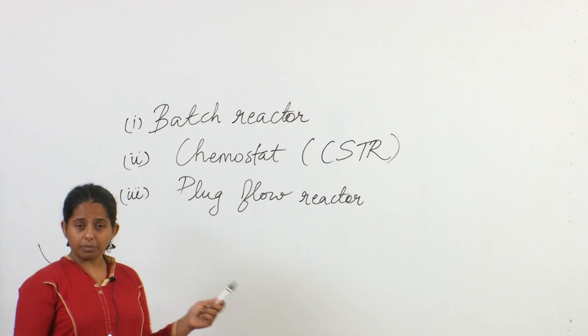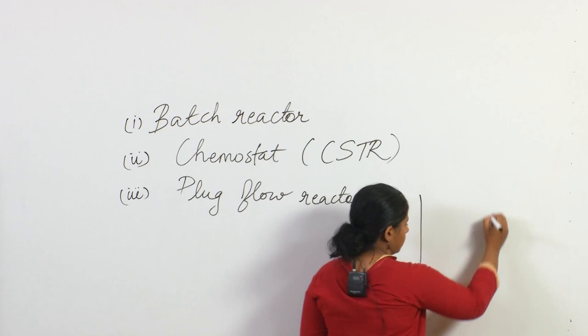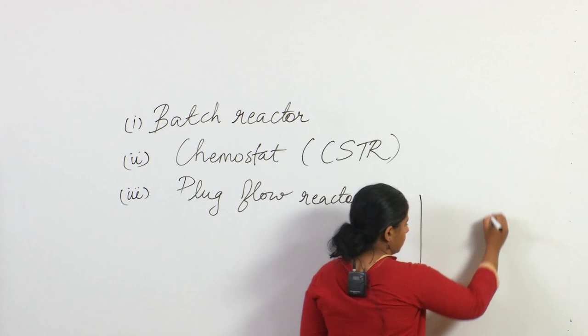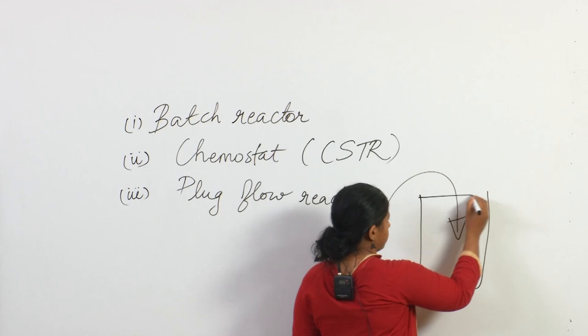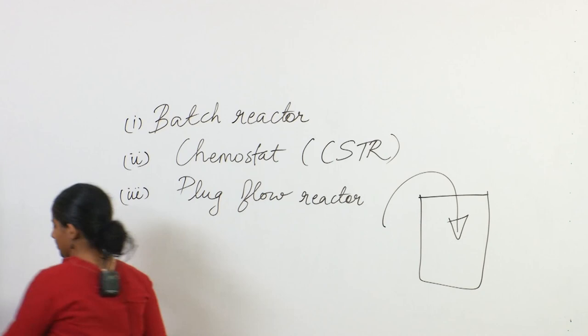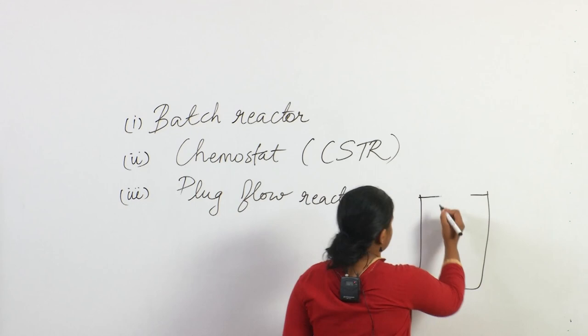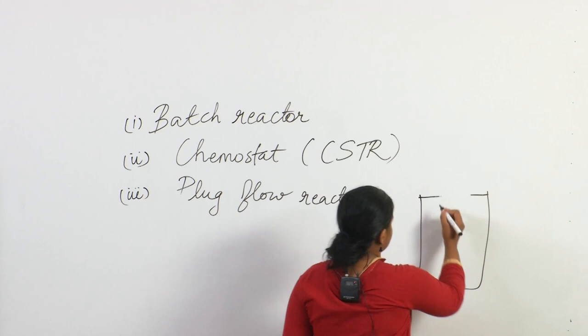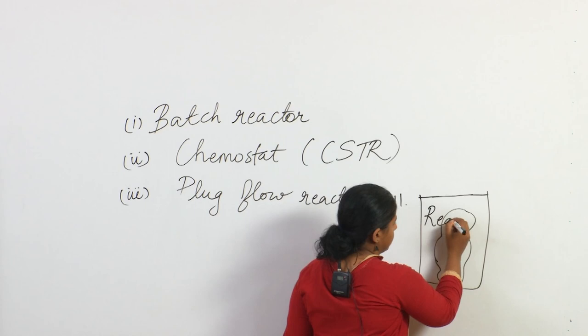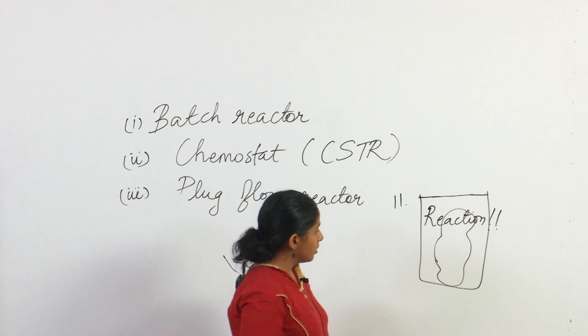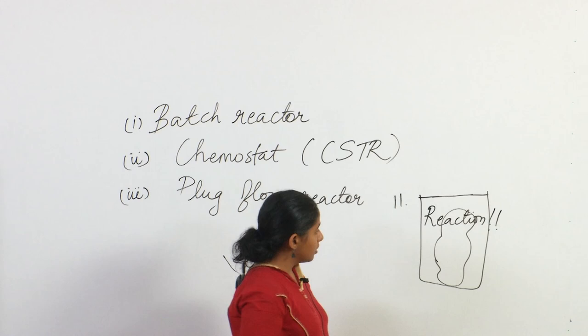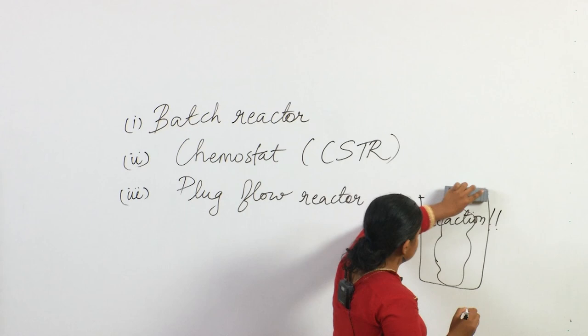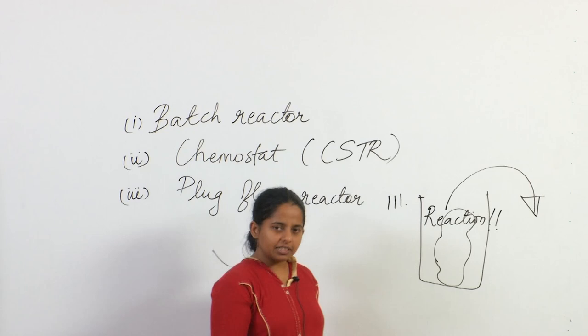The batch reactor is like a washing machine: you put things in — dirty clothes, soap, water — then you close it, allow the reaction to occur, and when the reaction is over, you open it and take your products out. So we put reactants in, allow the reaction to happen, and when the reaction is complete, we take our products out.